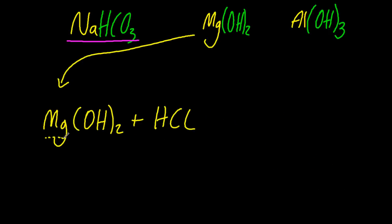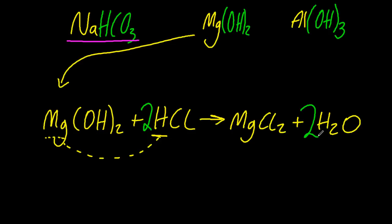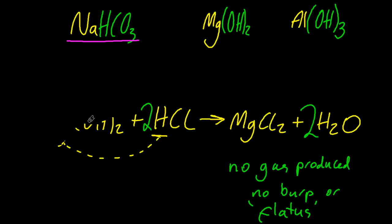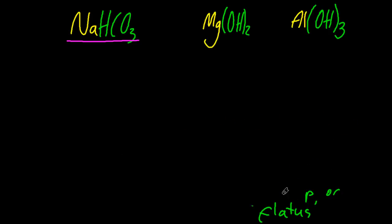Magnesium hydroxide. Again, swap the proton with the metal and we get magnesium chloride and water. Well, no gas there, so there will be no need for any anti-foaming agents, won't make any excess gas or flatus. And that will neutralize two acid molecules.